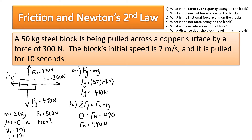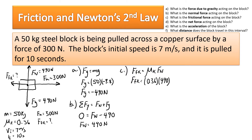Part C asks for the frictional force. Using the formula FF equals mu times FN, we plug in the coefficient of kinetic friction and the normal force. The force of kinetic friction equals 176.4 Newtons, which we add to the diagram.